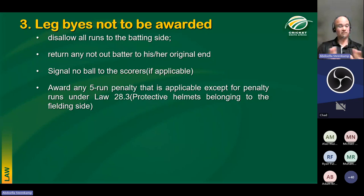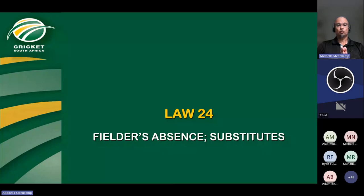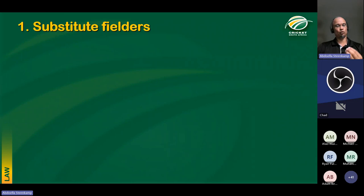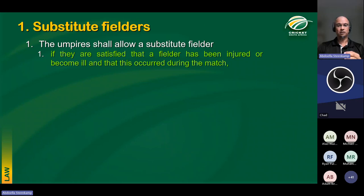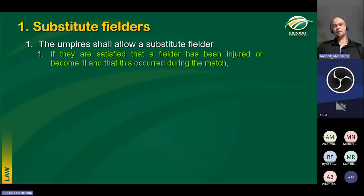When it comes to substitutes and what happens if a fielder is absent while play is in progress, the law guides umpires to allow a substitute fielder if the umpires are satisfied that a fielder has been injured or became ill, and that injury or illness occurred during this particular game. If we as umpires are satisfied that the fielder became injured or ill during the game, we will allow a substitute. That is the criterion to allow a substitute fielder.